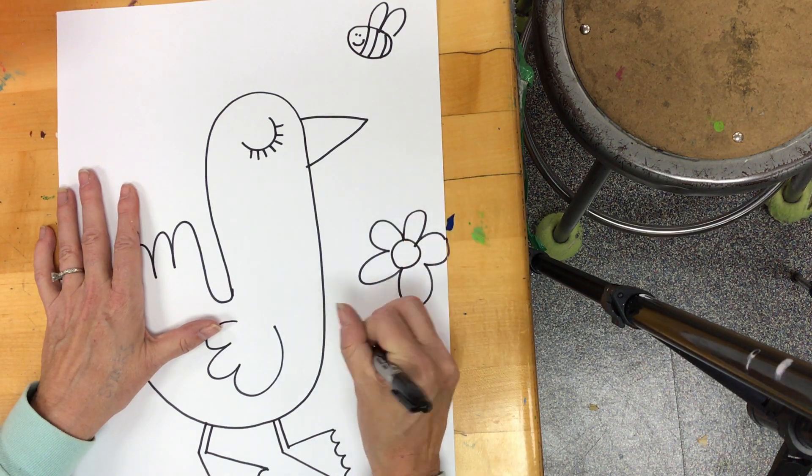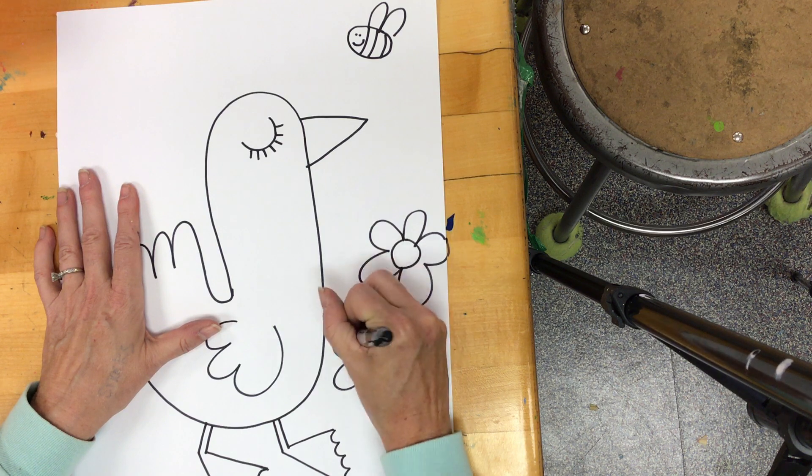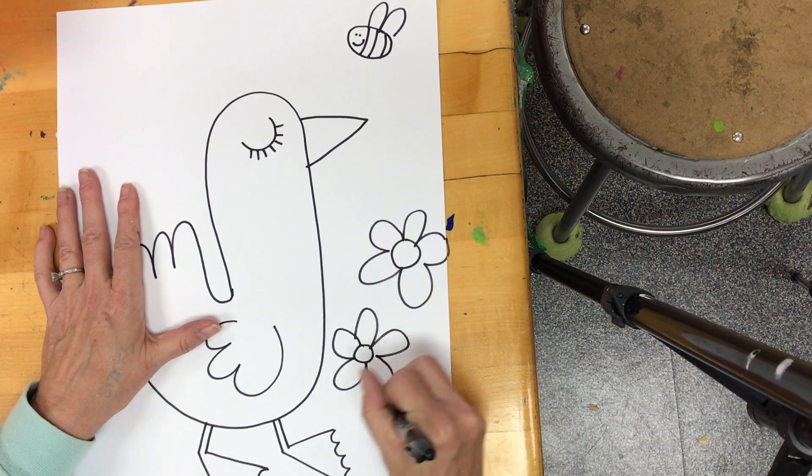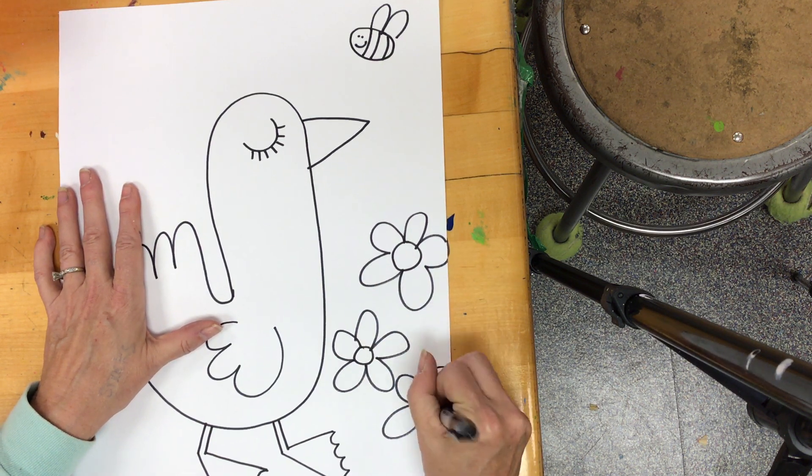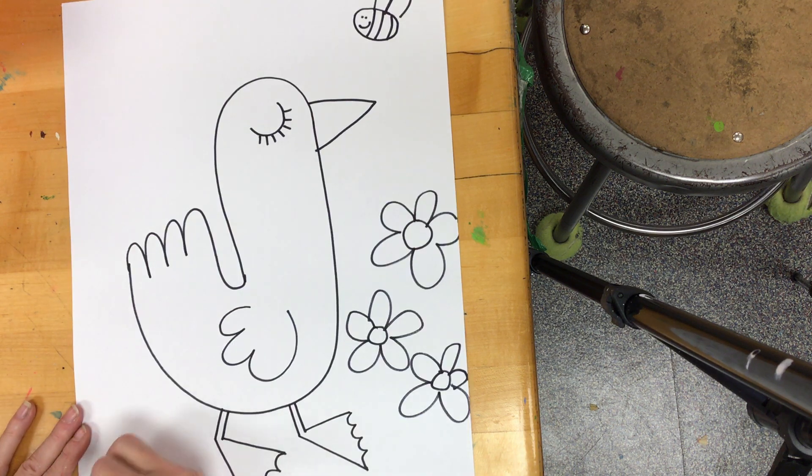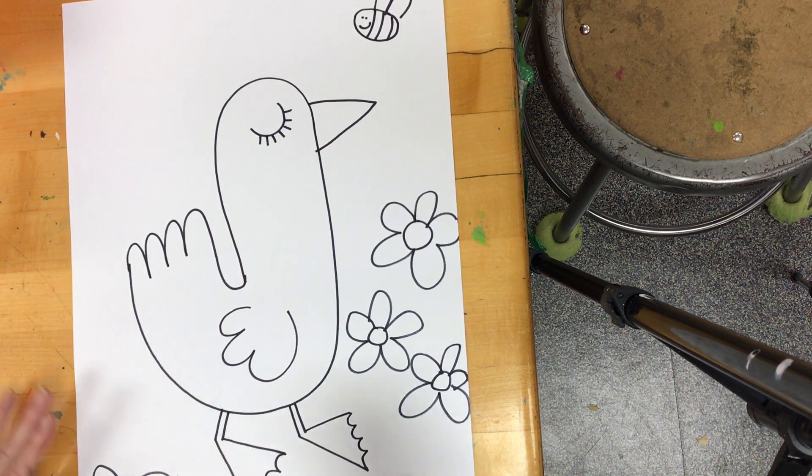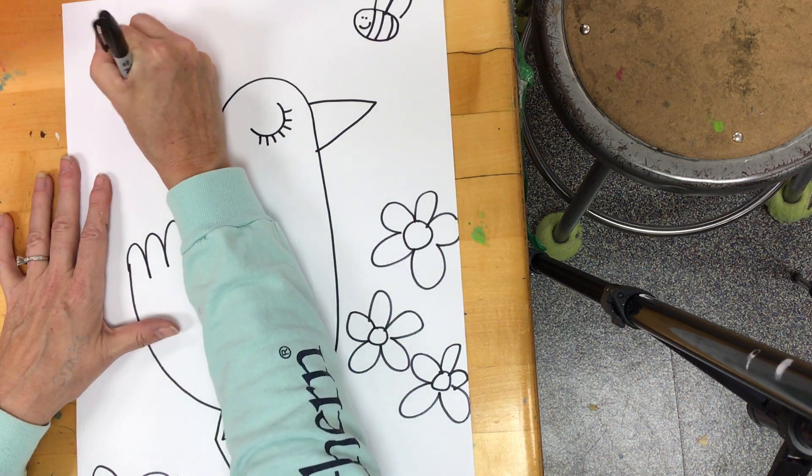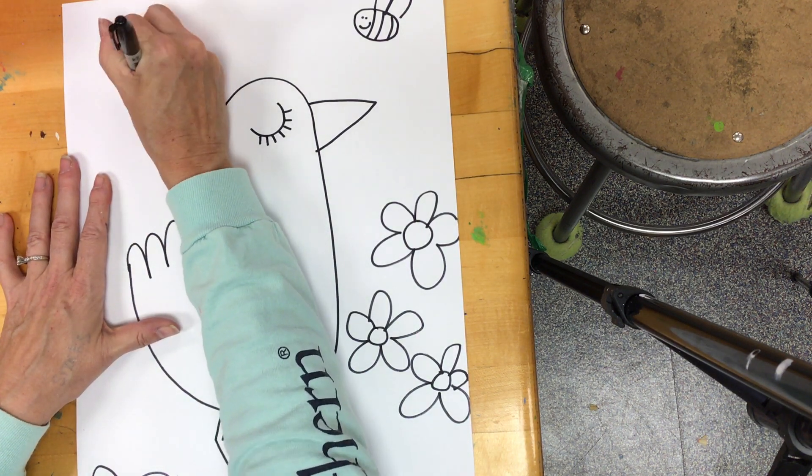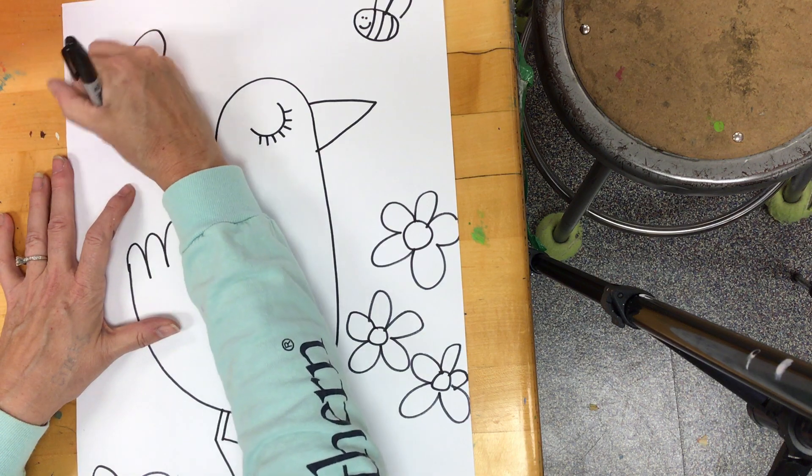You need to draw seven to nine things. We're not going to draw leaves or grass. So, I would say you could draw a butterfly. We see butterflies in the spring.